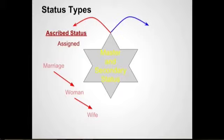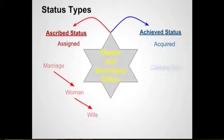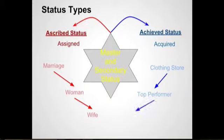Another type of status is achieved status — something that we acquire, something that we earn. Let's say our woman is working in a clothing store and she becomes a top performer. As a result of her performance, she becomes a manager. This is something that she has earned.